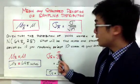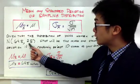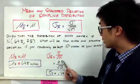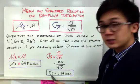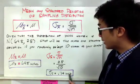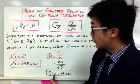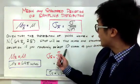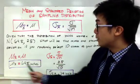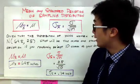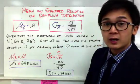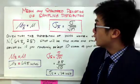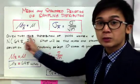For the standard deviation, it's going to change. We use the formula: sigma, the population standard deviation, which is 2.5, divided by the square root of 10, giving us 0.79 inches. This is your new sample standard deviation based on a sample size of 10, but your mean stays the same because of the central limit theorem.